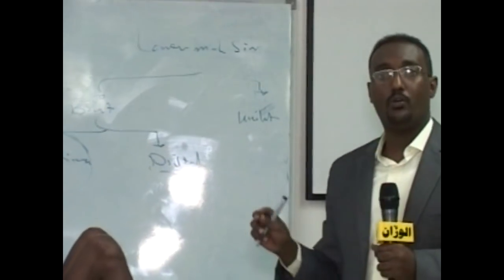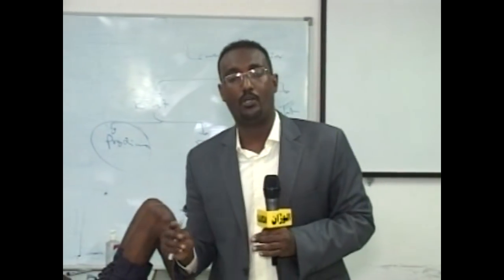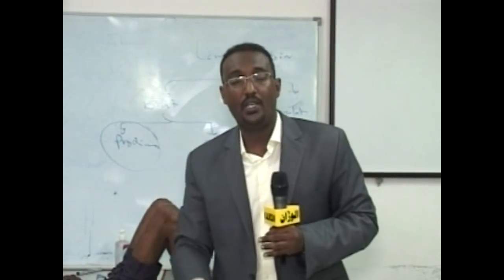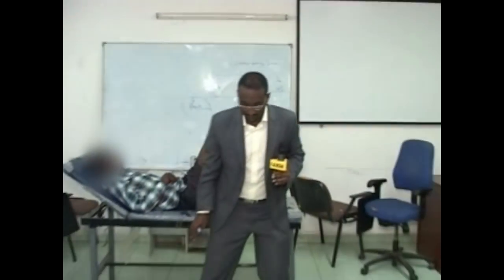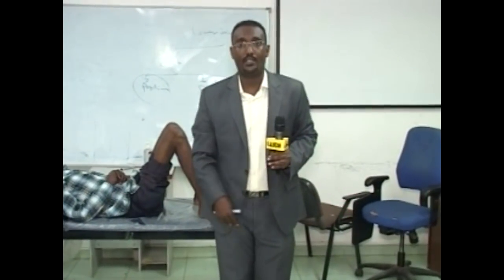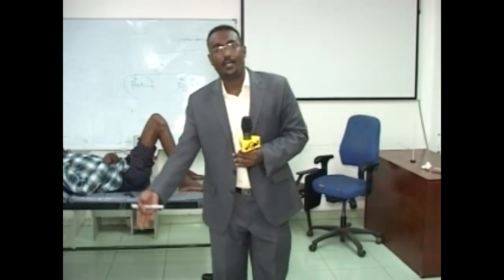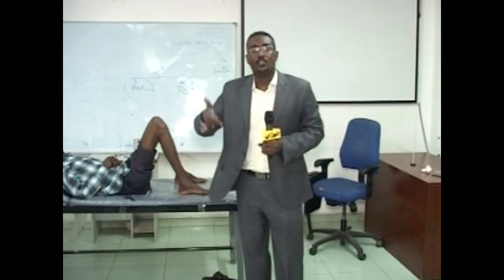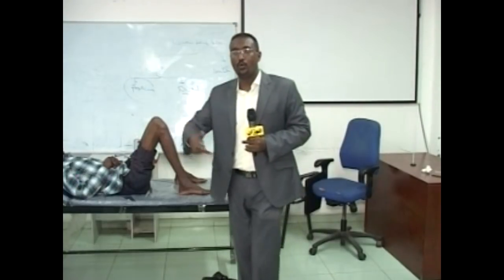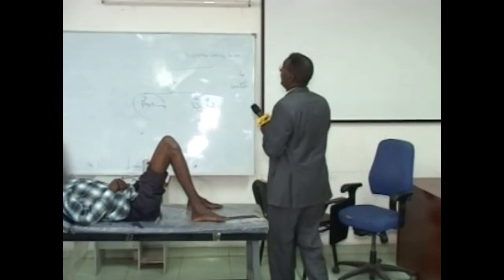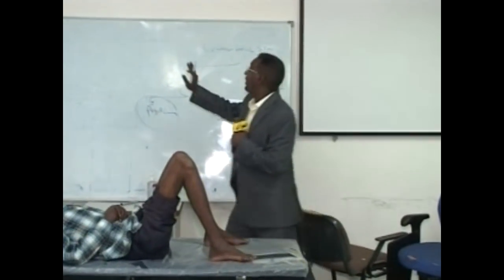Usually, the proximal myopathy is a finding in proximal myopathy patients. The patient cannot do adduction — the adductor is more weaker than the abductor, and proximally more weaker than distally. Extensors are more weaker than the flexors. Usually, the presentation of proximal myopathy will be like this.